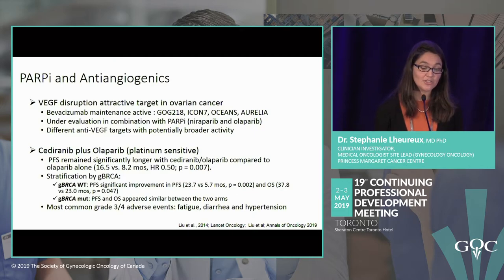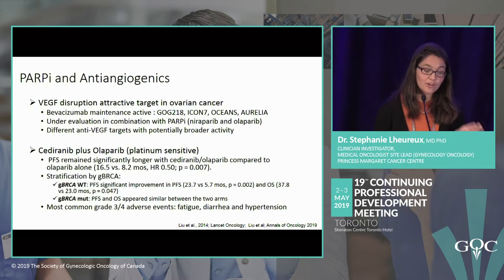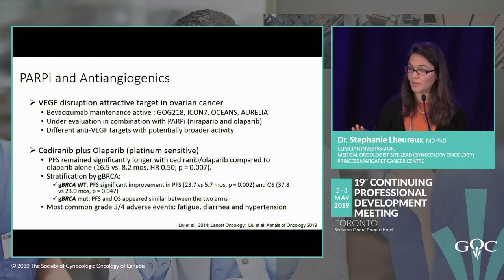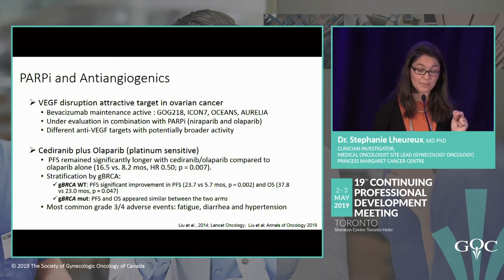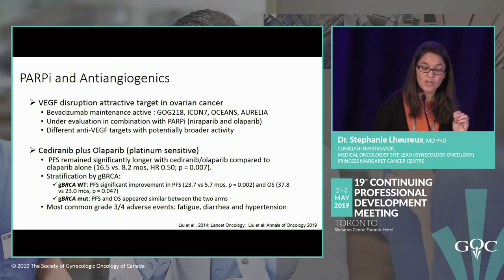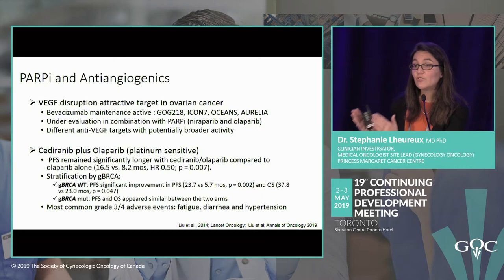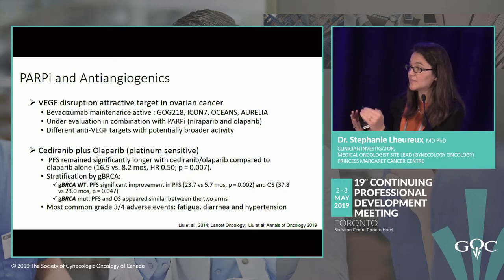A key phase 2 trial in platinum-sensitive recurrence combined olaparib and cediranib without chemotherapy. In non-BRCA mutation patients, the PFS improved significantly from 5.7 months to 23.7 months with the olaparib-cediranib combination, showing that even without BRCA mutation, PARP inhibition may be active when combined with anti-angiogenic therapy.